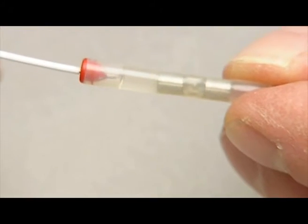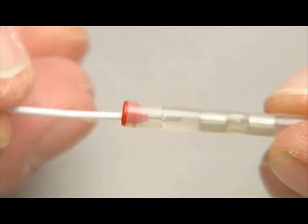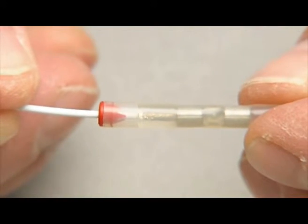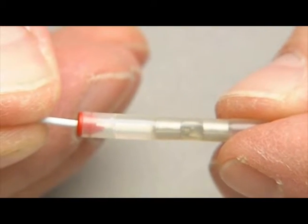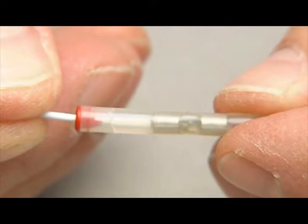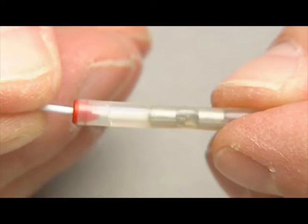Take the cold-applied splice in one hand and the end of the stripped wire in the other. Insert the wire into the splice through the gel, being careful to center the wire. It will bottom out, so the stripped wire end can be seen through the window.